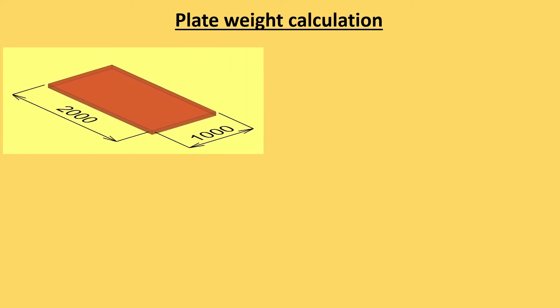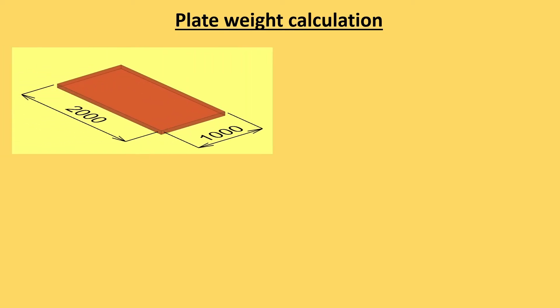So this one is a MS plate having size 2 meter by 1 meter and thickness of this plate is 10 mm. As we know the weight is multiplication of density and volume.